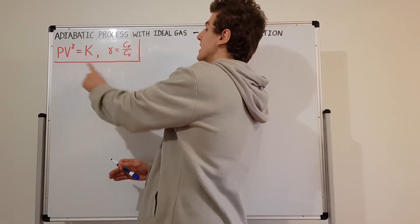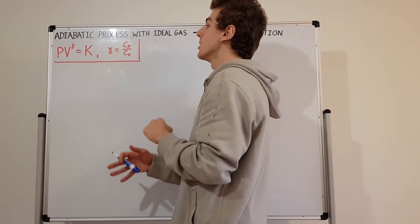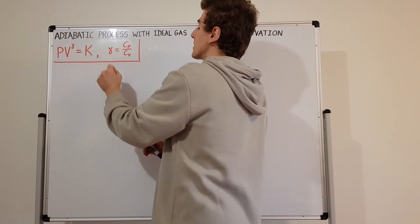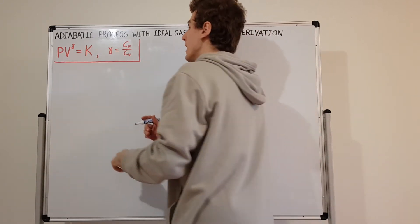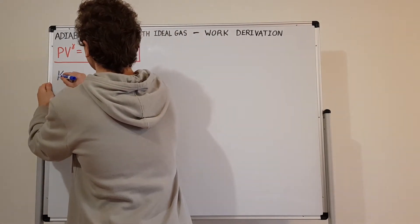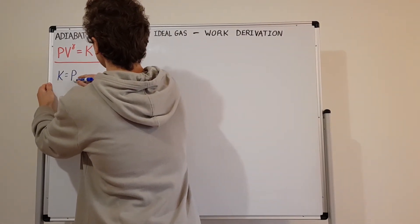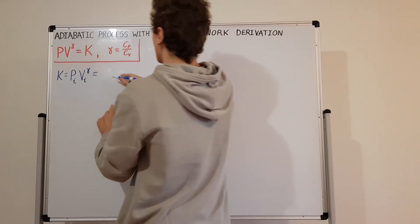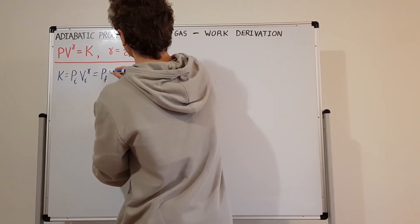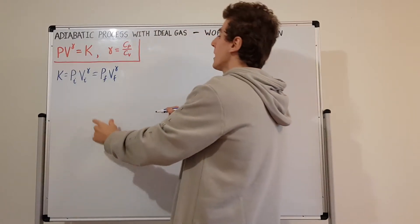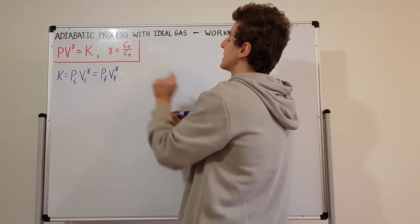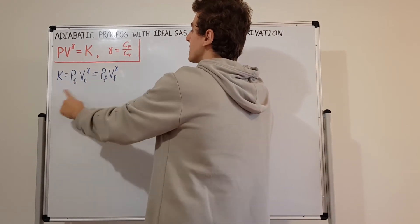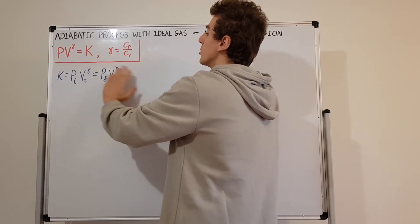To do that we need the adiabatic condition, which is derived in some of the videos of this playlist. It states that PV to the power of gamma is a constant K. So initially I'm going to say that K is equal to P-initial times V-initial to the power of gamma, and it's also equal to P-final times V-final to the power of gamma. Gamma is the ratio of C_P over C_V.